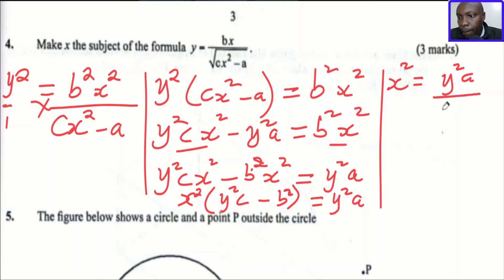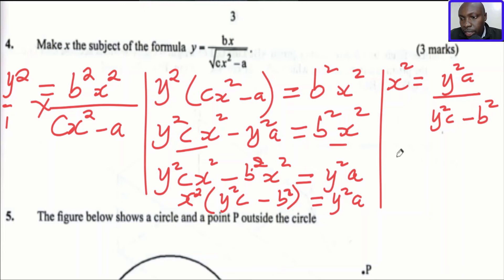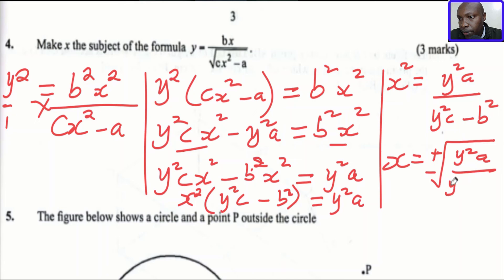To get x from x squared, we take the square root of both sides. So x equals — and when you take the square root you get either a positive or negative number — so x equals plus or minus the square root of y squared a divided by y squared c minus b squared. That is how we make x the subject of the formula.